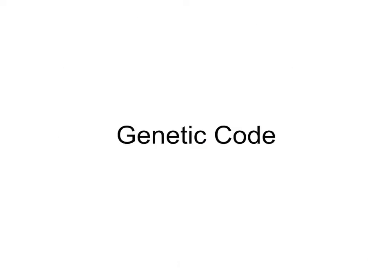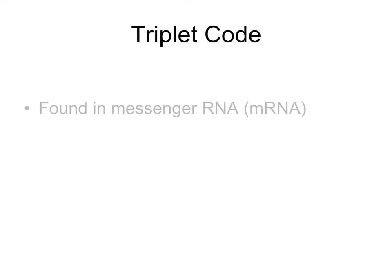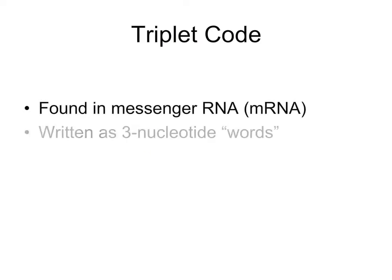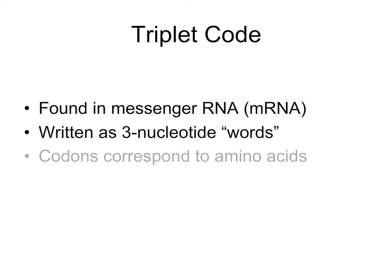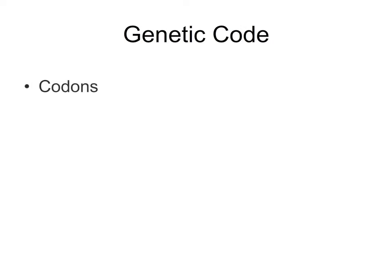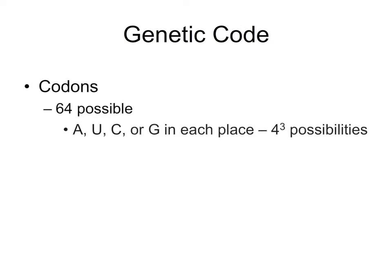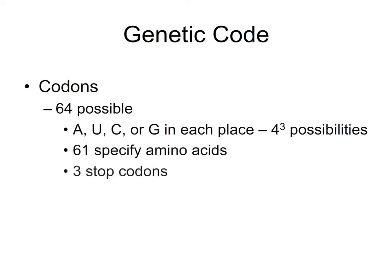The language genes are written in is called the genetic code. The messenger RNA's nucleotides are a copy of the genetic DNA sequence. Every three nucleotides is a triplet, or codon, and each triplet corresponds to a certain amino acid. As we can have one of four different RNA nucleotides in each spot of the triplet, there are 64 different possible combinations — 61 of these code for amino acids, while three are signals to stop translation.